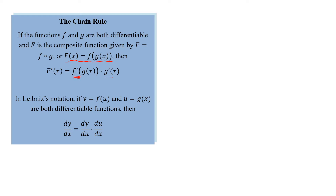In Leibniz's notation, it looks like this: we have dy over dx, and that's going to be dy over du times du over dx. That's going to be with u-substitution, which we'll actually take a look at here in the first example.